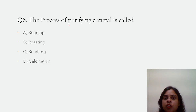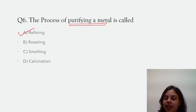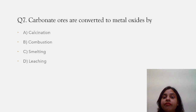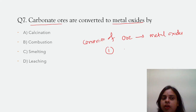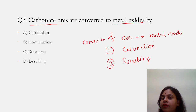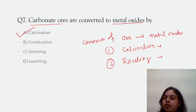The process of purifying a metal is called refining. The options are refining, roasting, melting, and calcination — the correct answer is refining. Next question: carbonate ores are converted to metal oxide by which process? There are two processes of converting an ore into metal oxide: calcination and roasting. In case of calcination, we convert carbonate ores. So the correct answer is calcination.